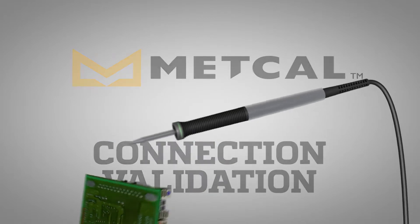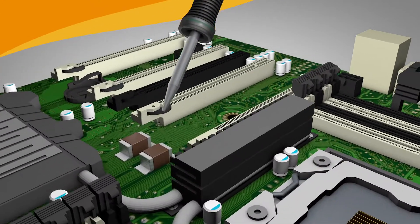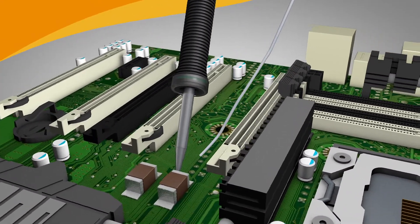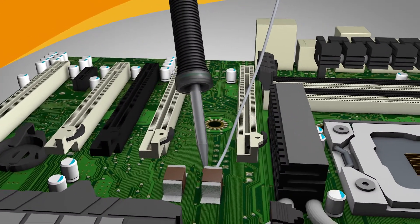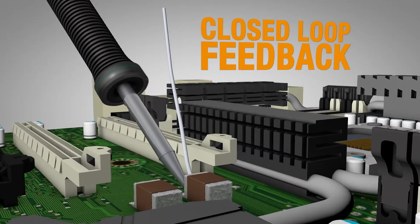The intermetallic compound thickness is critical in the formation of a solder joint. Connection Validation evaluates the quality of the solder joint by calculating the intermetallic compound formation and providing closed-loop feedback to the operator.